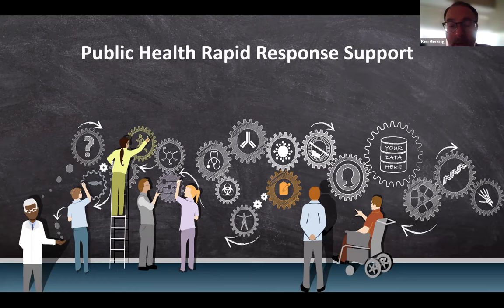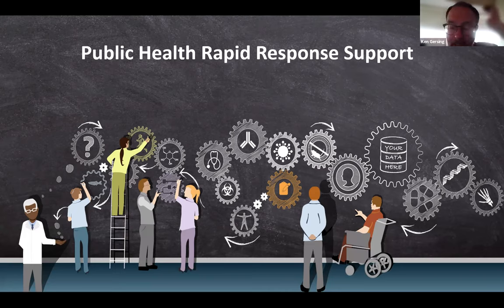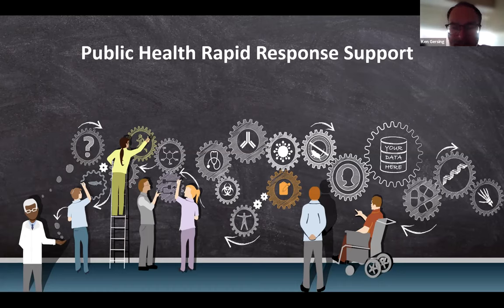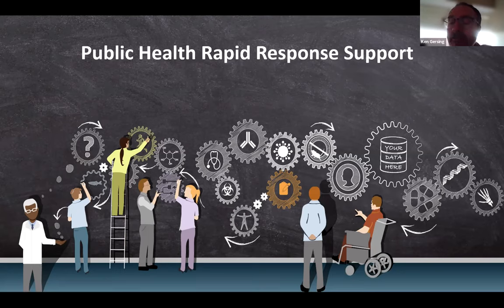The White House needed to know about Paxlovid rebound because they had to decide whether to order the drug. The only other study had 300 patients; we had nearly 20,000. The team worked many nights over two weeks and helped the White House decide to purchase Paxlovid. However, asking investigators like Emily, Melissa, and Richard to drop everything is not sustainable. We've developed a process to offer funding to people willing to answer these high-priority questions quickly.